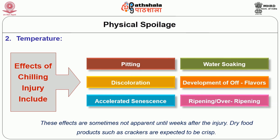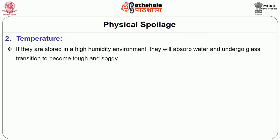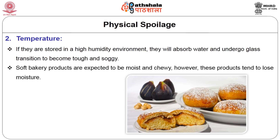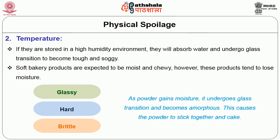Dry food products such as crackers are expected to be crisp. However, if they are stored in a high humidity environment, they will absorb water and undergo glass transition to become tough and soggy. Conversely, soft bakery products are expected to be moist, but these products tend to lose moisture and become glassy, hard, and brittle. As powder gains moisture, it undergoes glass transition and becomes amorphous, causing the powder to stick together and cake.